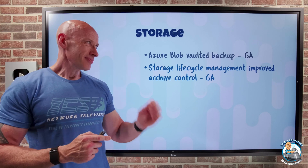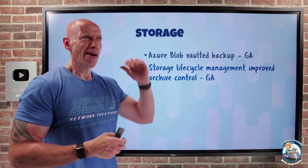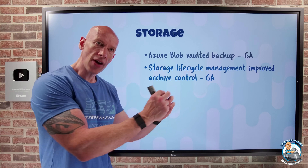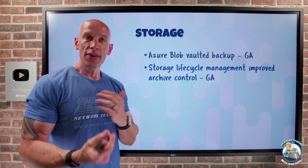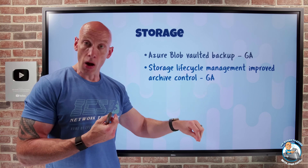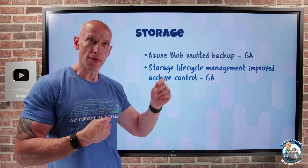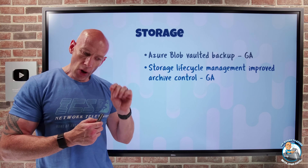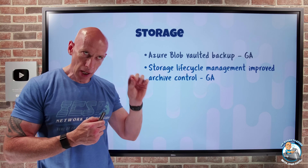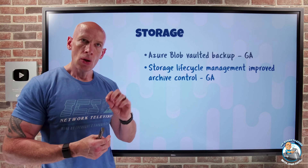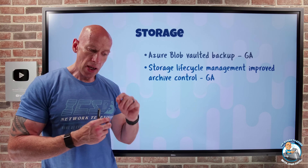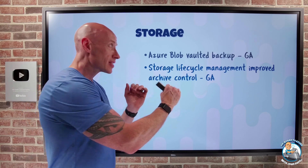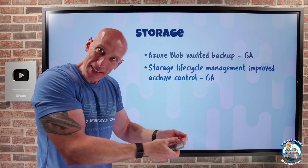Storage lifecycle management has improved archive control. With storage tiers — hot, cool, cold, and archive — archive is offline and requires rehydration to read. You might want to ensure data doesn't go back to archive immediately after rehydration, keeping it in an active tier for a certain number of days. Previously, the 'days after last change tier' option only worked with modified time. Now it will also work with creation time and last access time, giving improved control over how long data stays in a rehydrated tier before returning to archive.